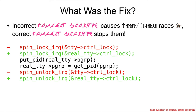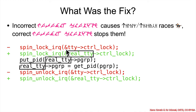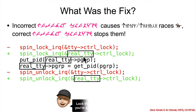So what was the fix? If a mutual exclusion problem causes retain-release races, then correct mutual exclusion stops them. The core issue was locking the master but operating on the slave. If you're going to operate on the slave, lock the slave. Make sure you're actually locking the data that you're accessing — if you do that, then it's all good.